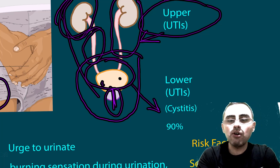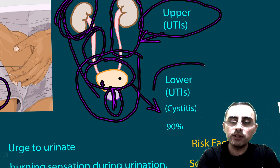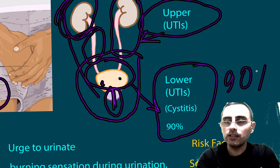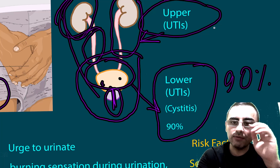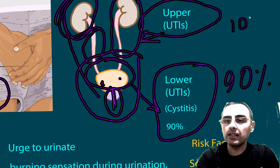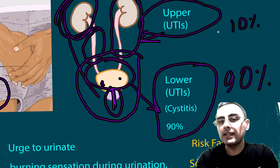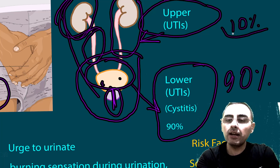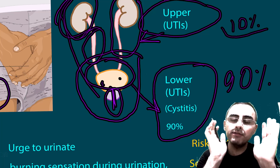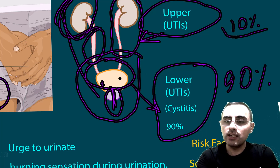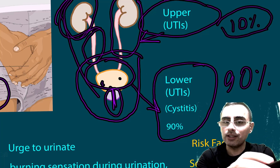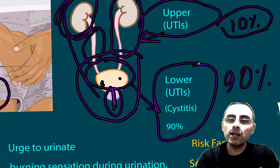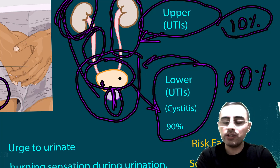Lower urinary tract infection is more common, occurring in around 90 percent of UTI cases. Upper urinary tract infection is rare, occurring in only 10 percent of cases, but it is more severe because if left untreated it can seriously damage the kidneys. In lower UTI, symptoms usually improve within several days or sometimes a week.